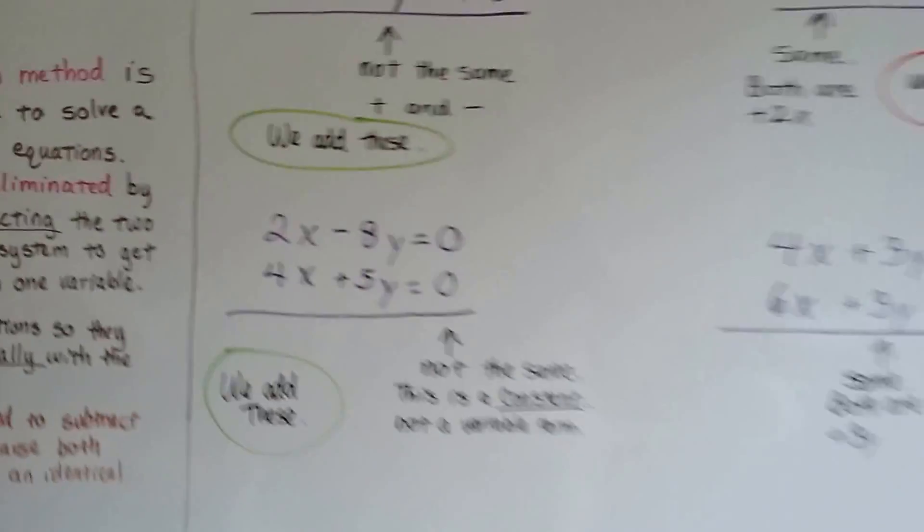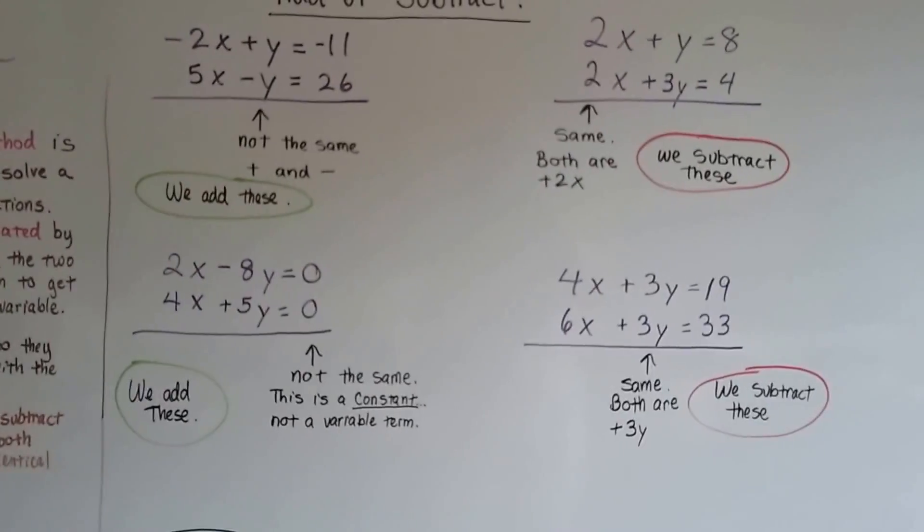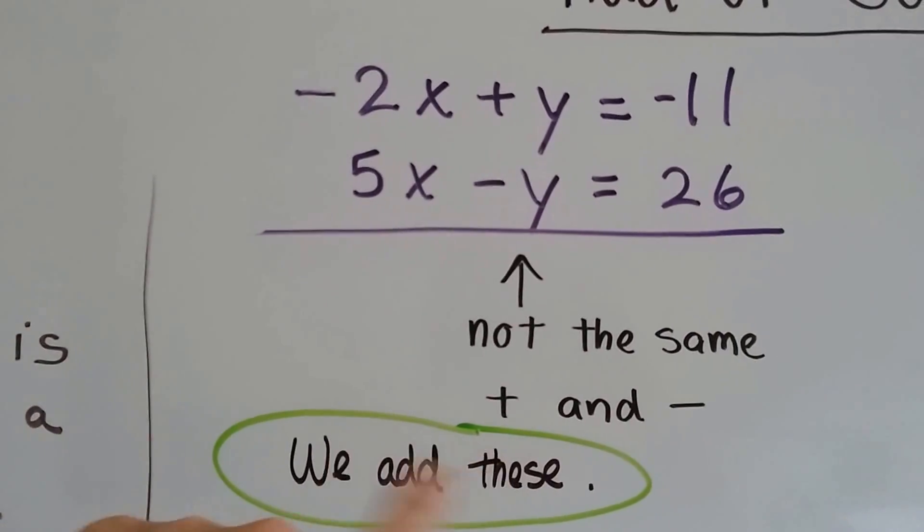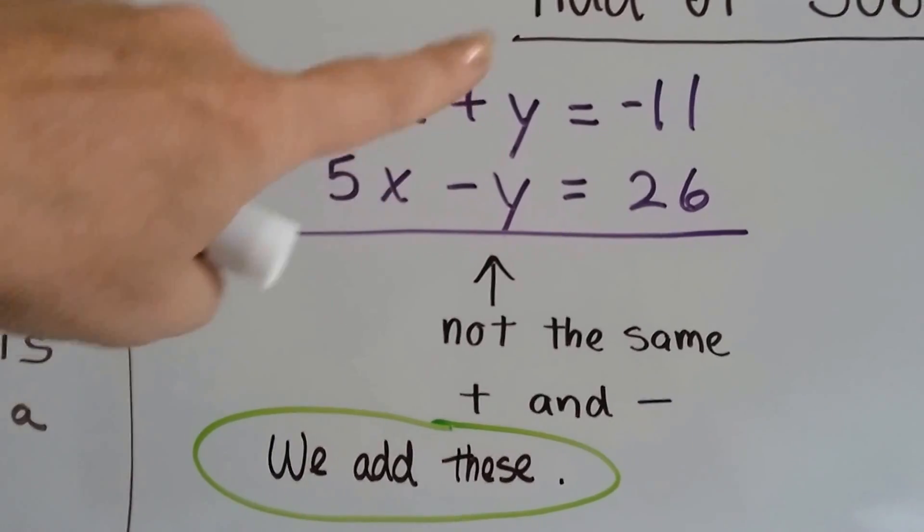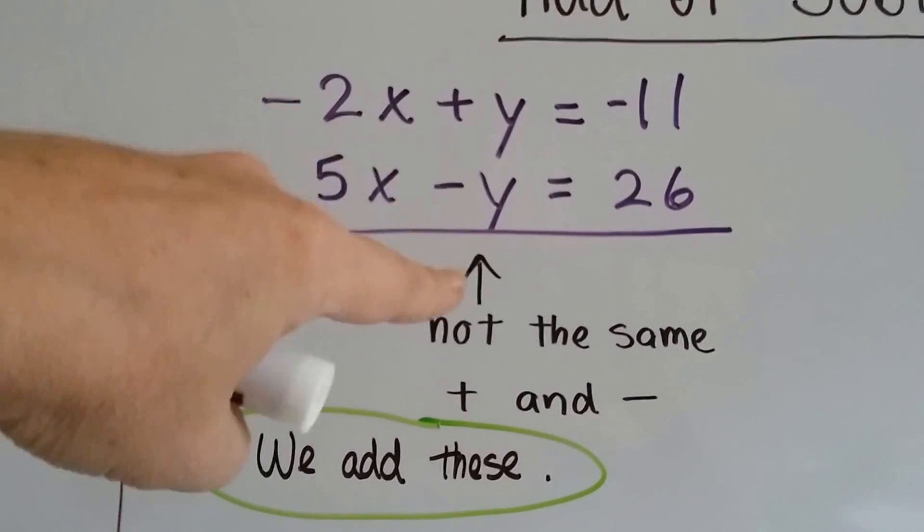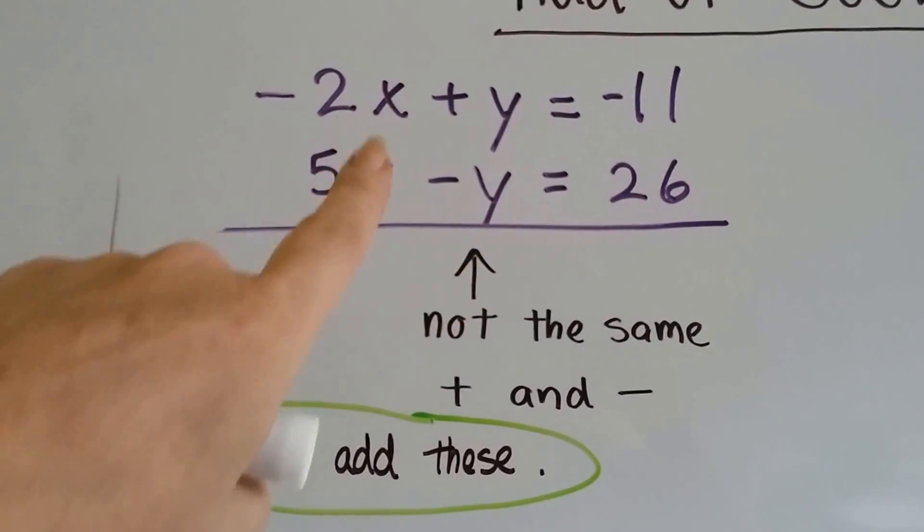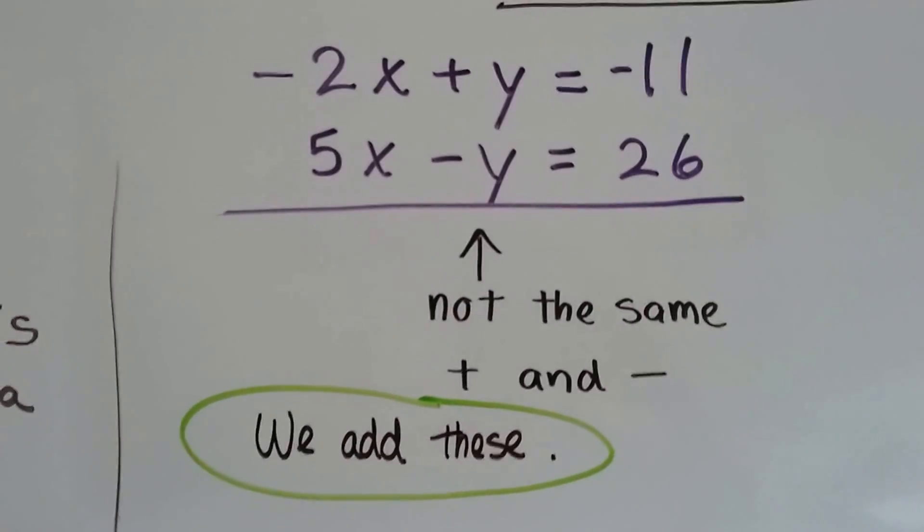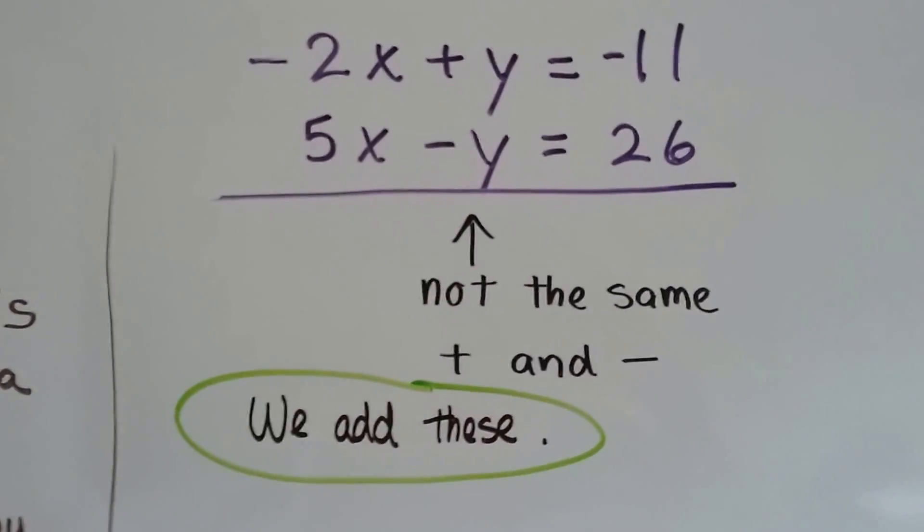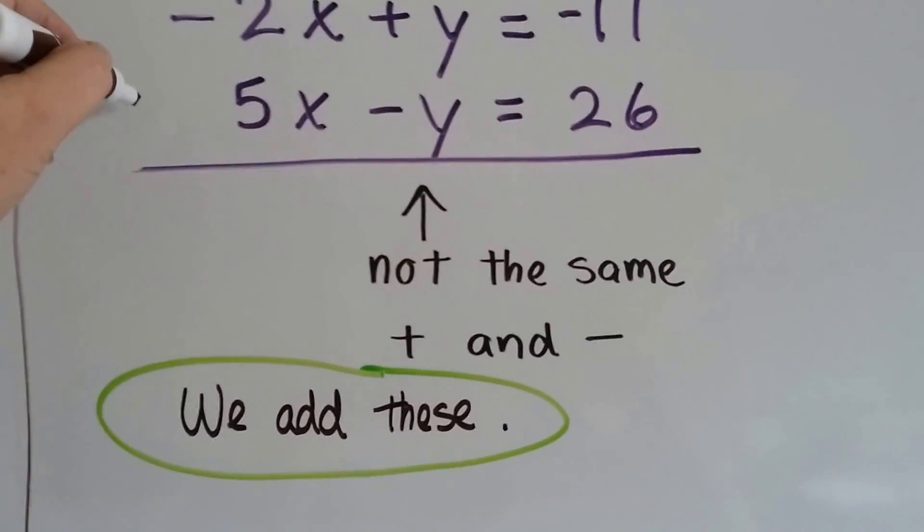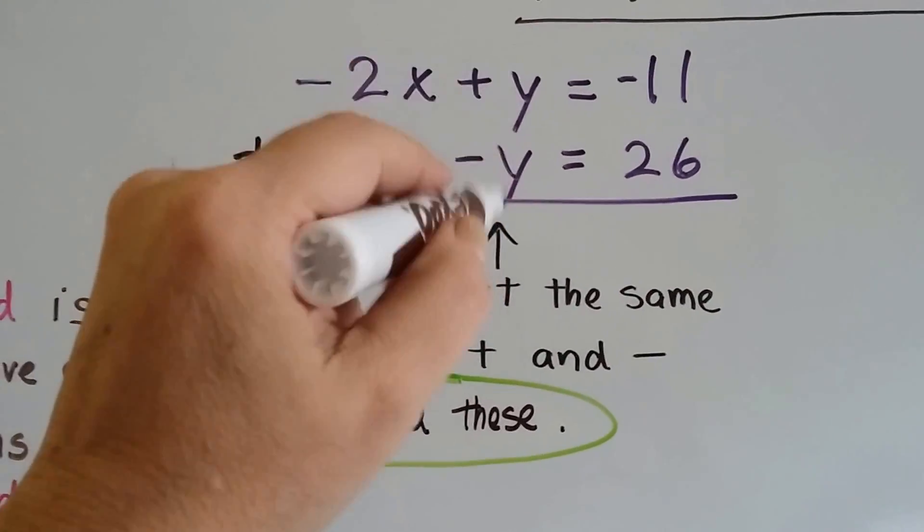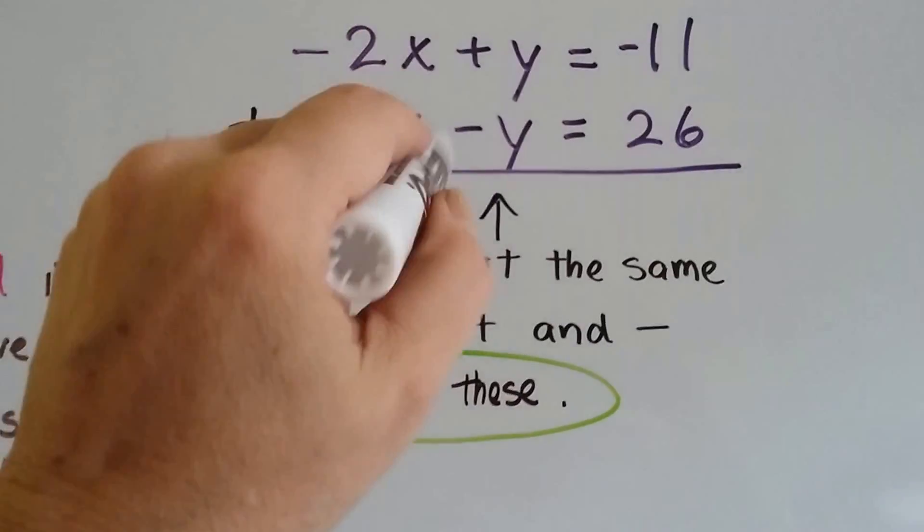I've got four sets of equations here, four systems of equations. Let's look at this first one. You can see I already wrote we add these, but why? They both have a y here with that invisible one in front of it, but they're not the same. One's a positive and one's a negative. So this doesn't have any variable terms that are identical. So this one is going to be an addition problem. Plus and minus is not the same thing.